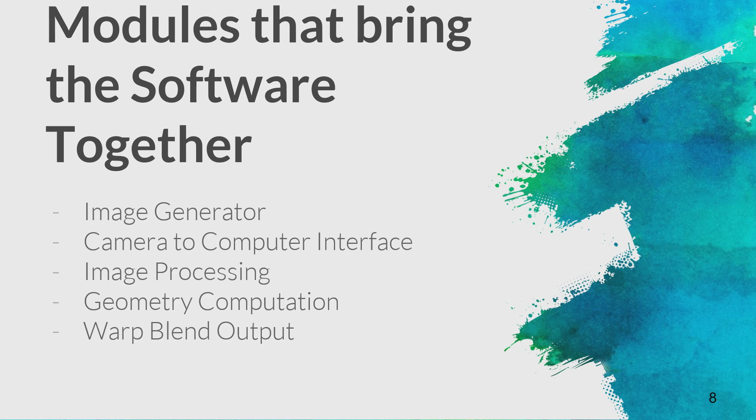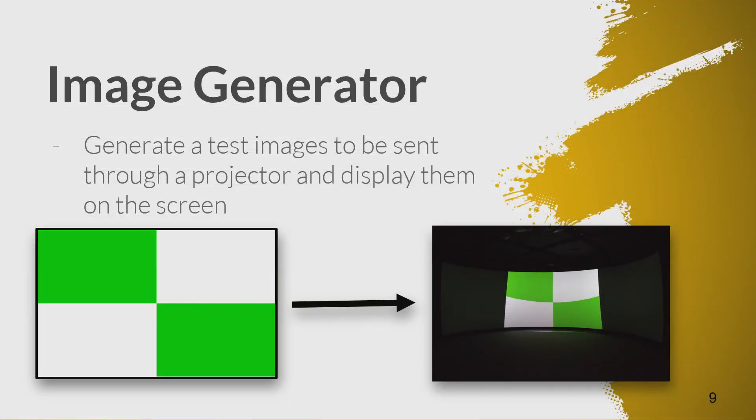The modules that bring the software together: it's broken down into five different modules — the image generator, camera to computer interface, image processing, geometry computation, and warp blend output. I'll go through those step by step.